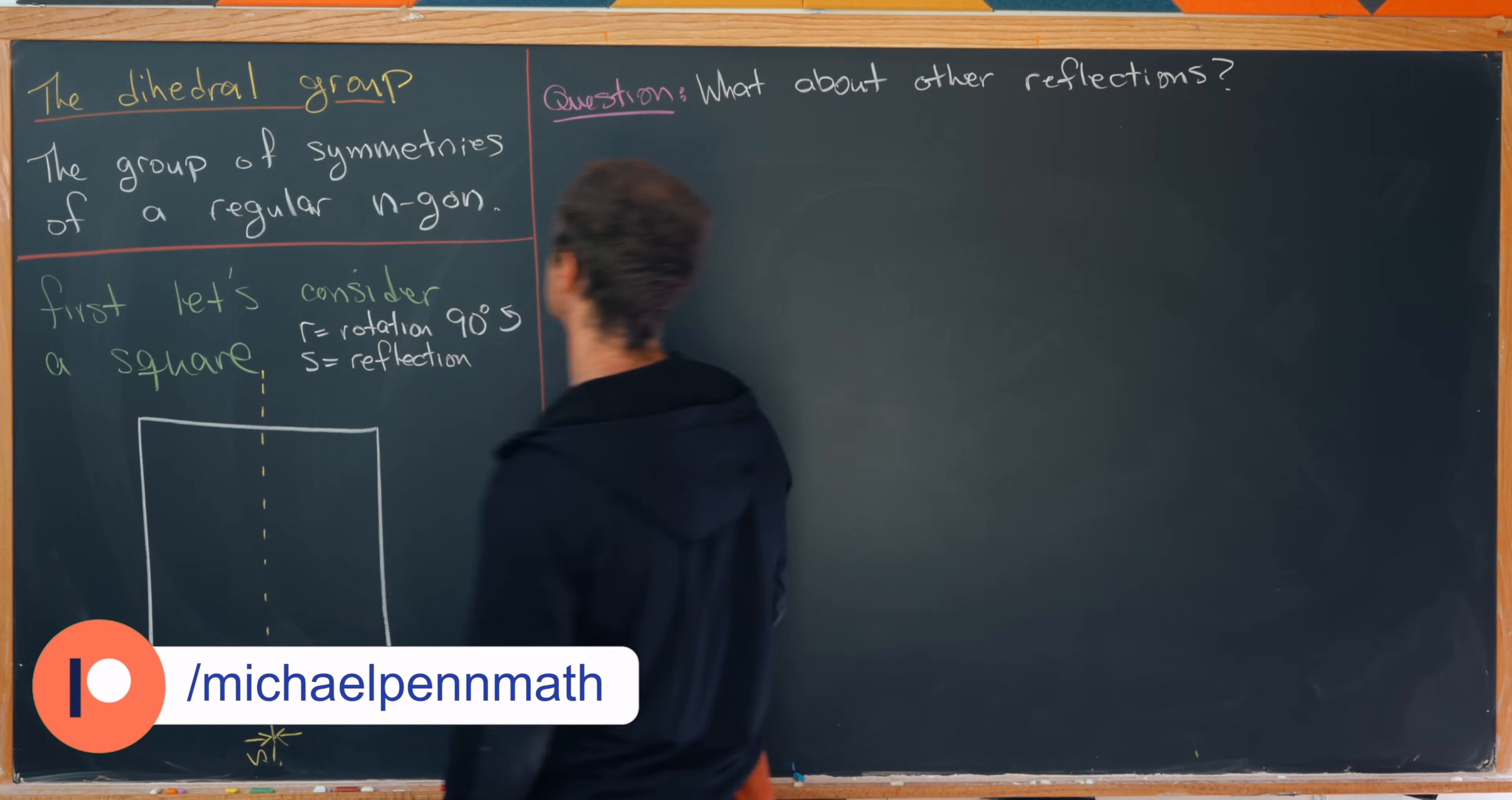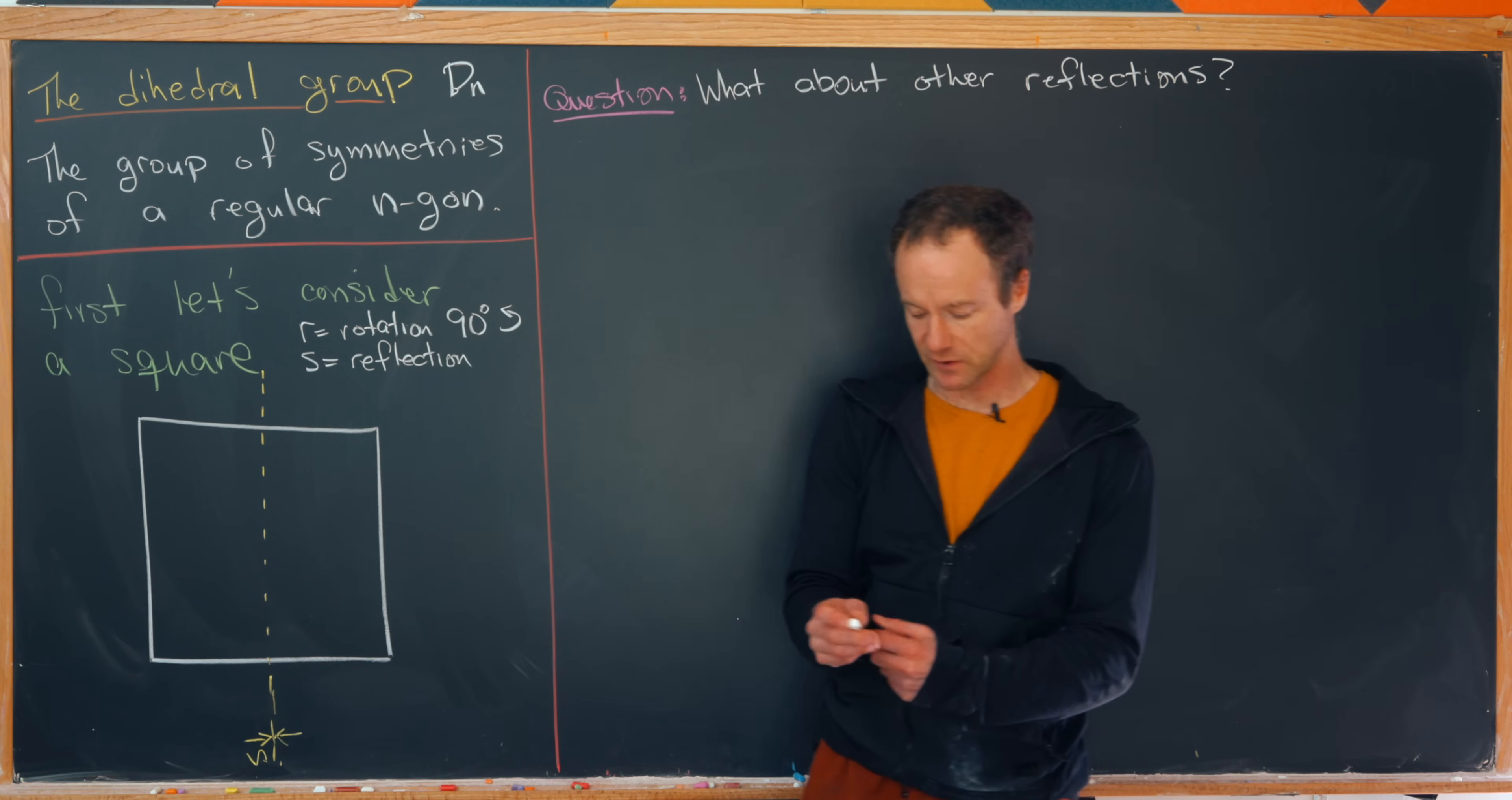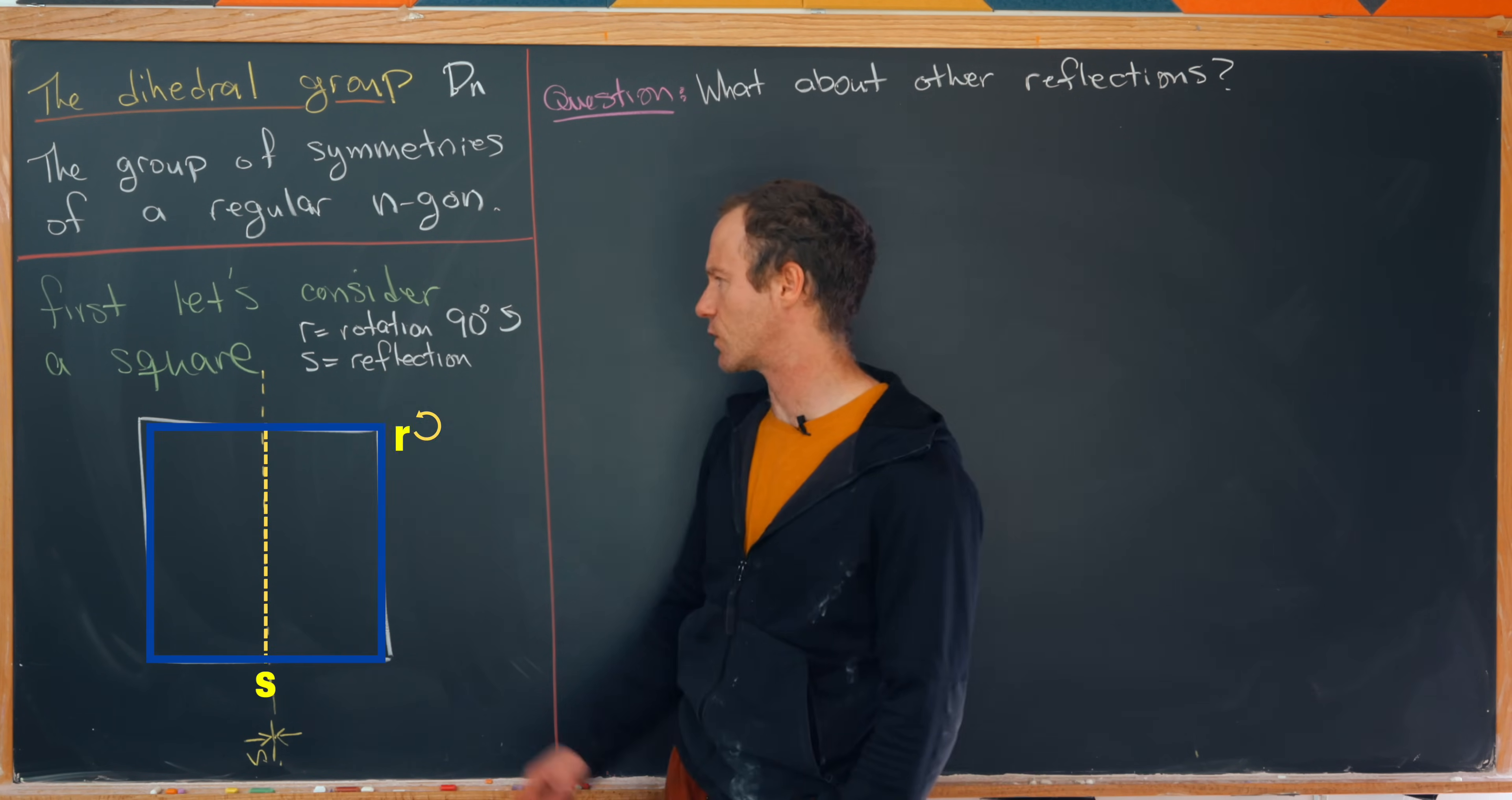Okay, so let's get to it. Today we're going to talk a little bit about the dihedral group, which is the group of symmetries of a regular n-gon and the general notation is d sub n. But first, let's consider a square and the symmetries of a square. So here I've got a square right here.